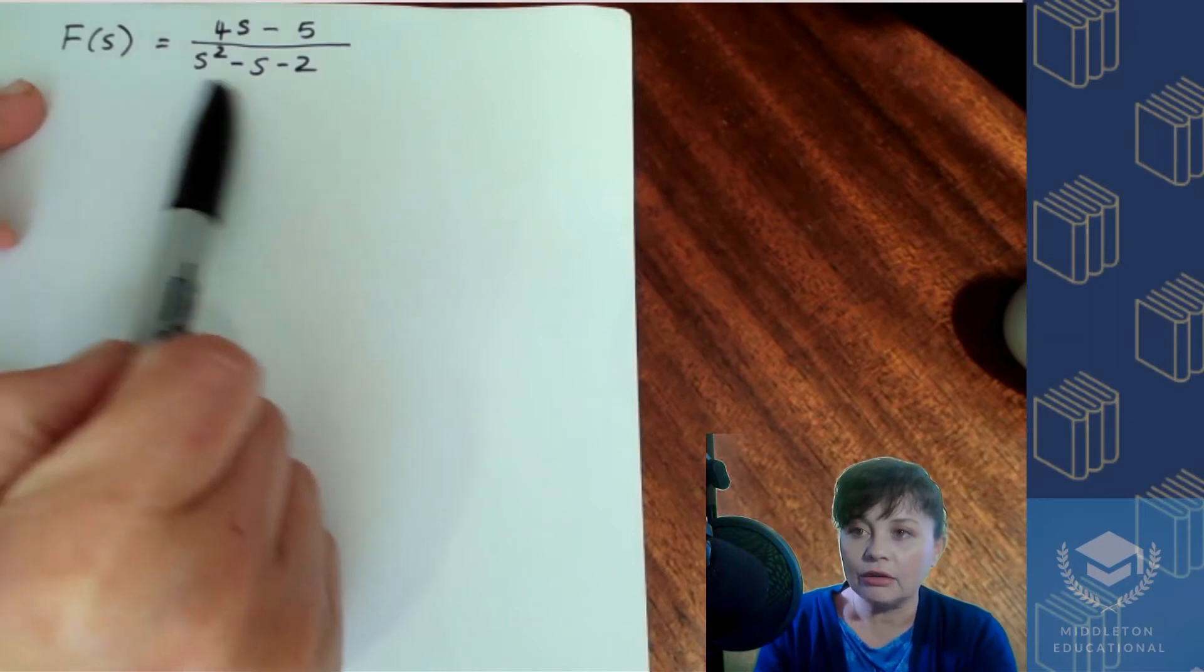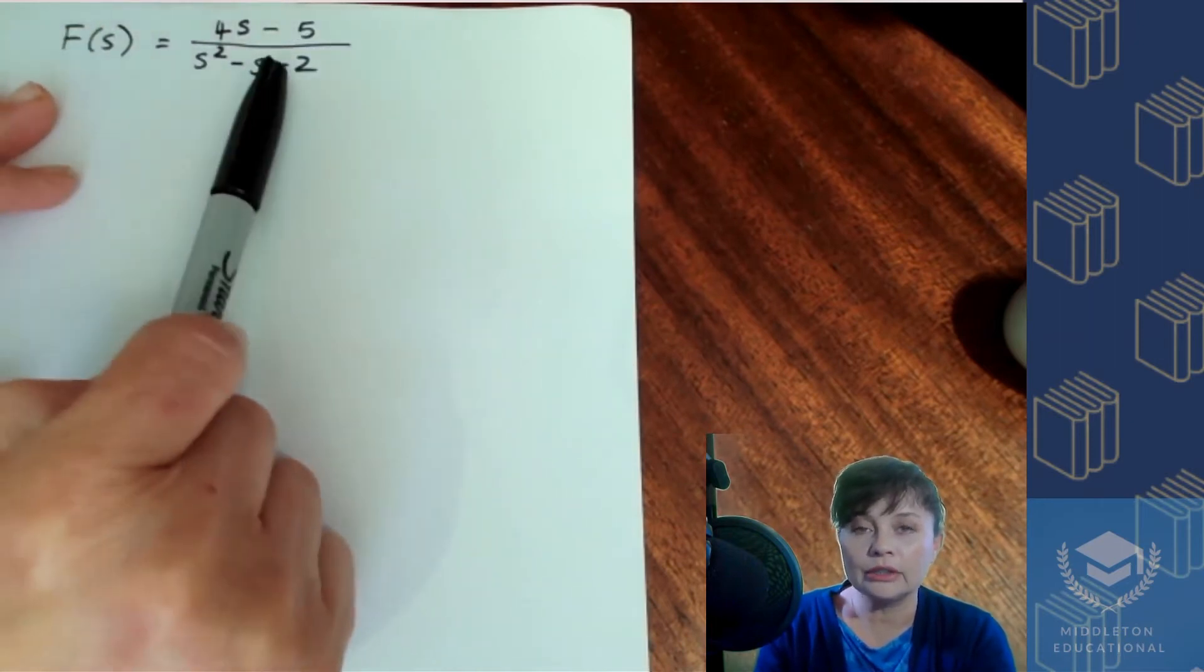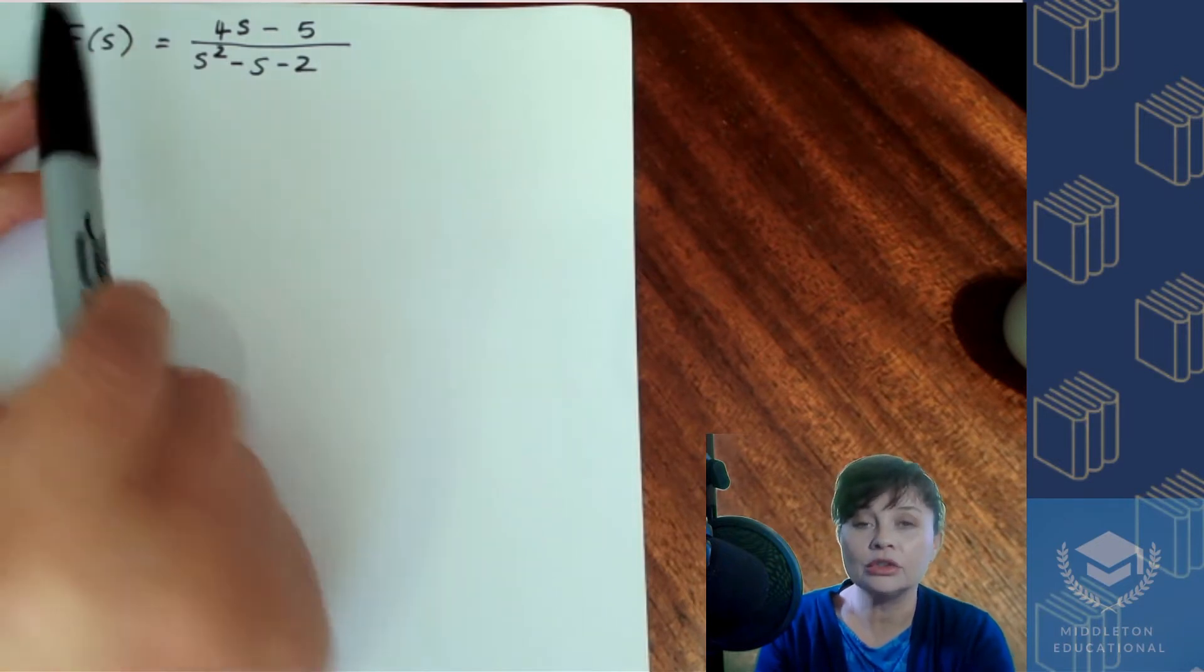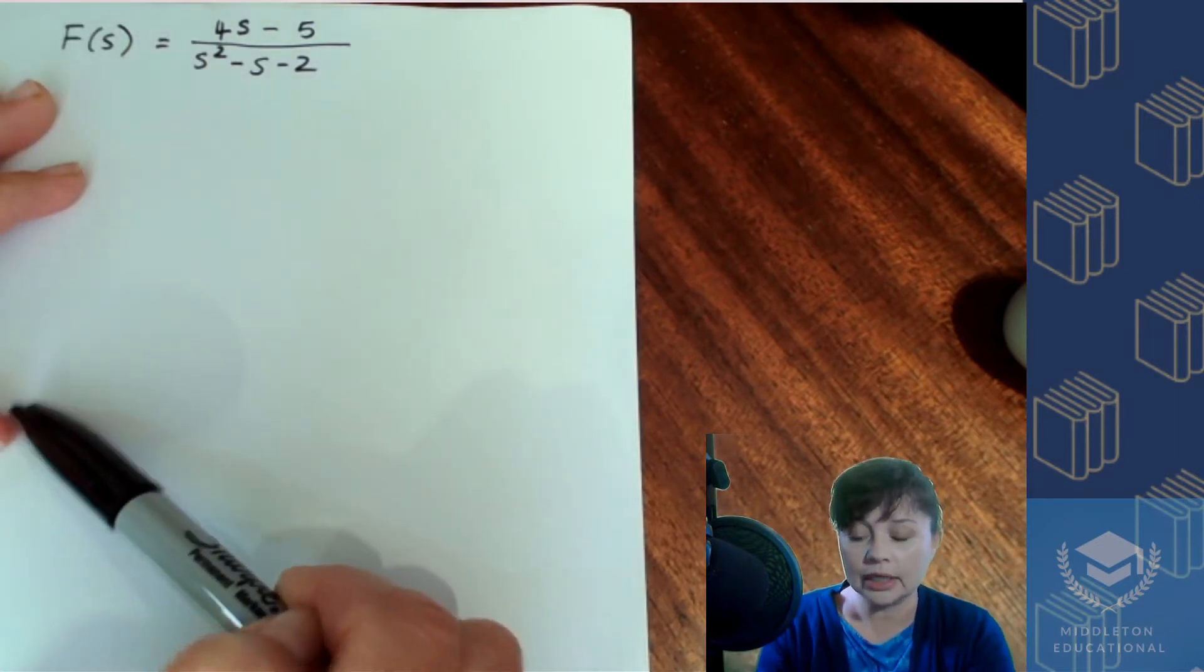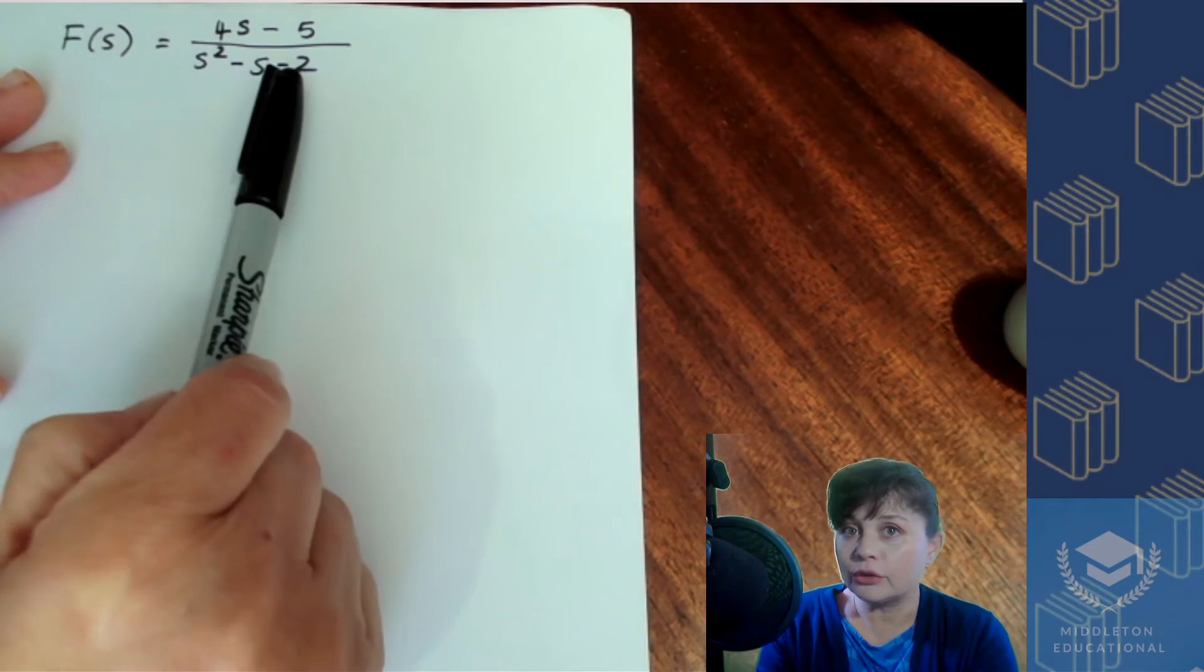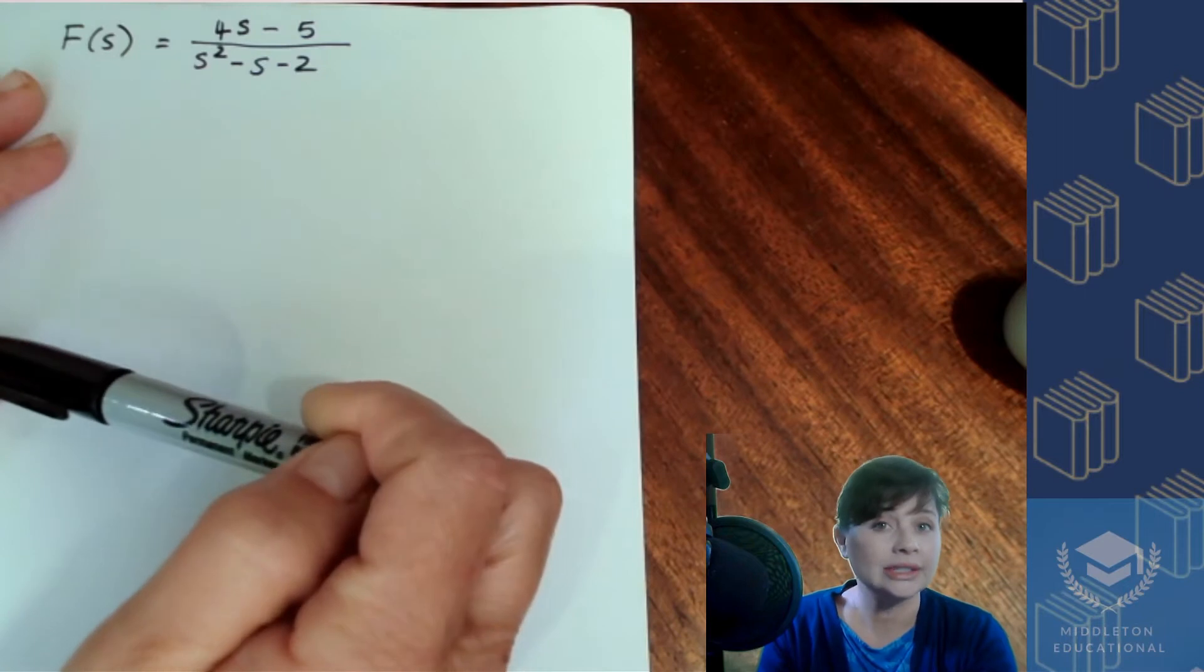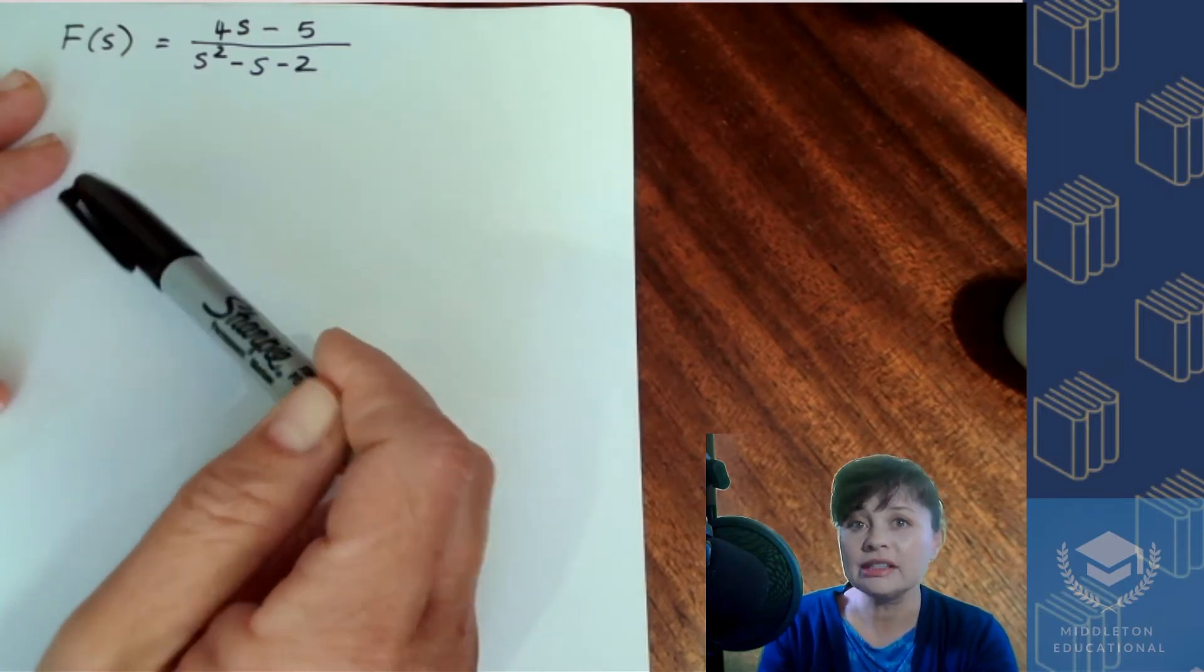So this is our Laplace transform, and we want to find the inverse of that. We want to move from f of s into f of t. This is in your frequency domain because your variable in this case is s. You want to take it back into the time domain where your variable is t.